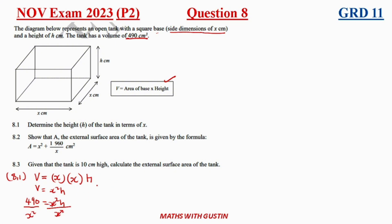Therefore h is equal to 490 all over x squared. And you can leave it there and it does look like h in terms of that. So let's move on to 8.2.